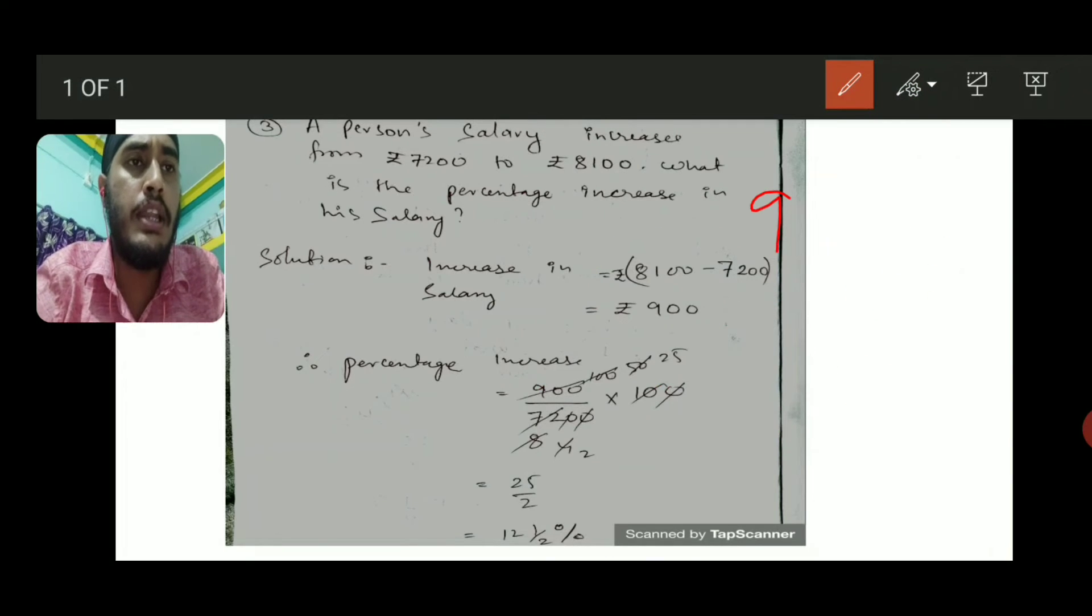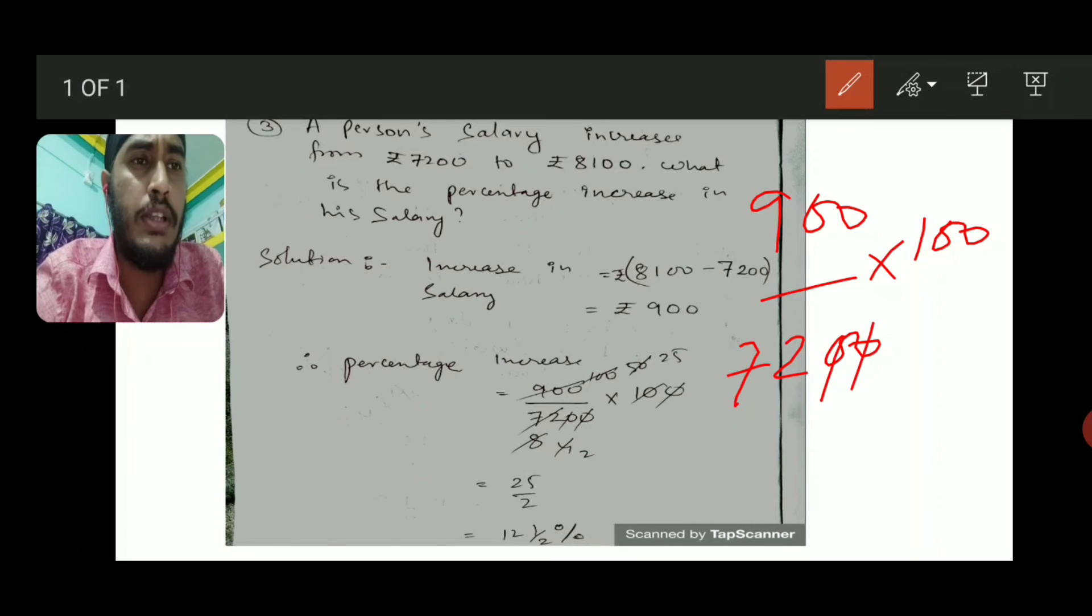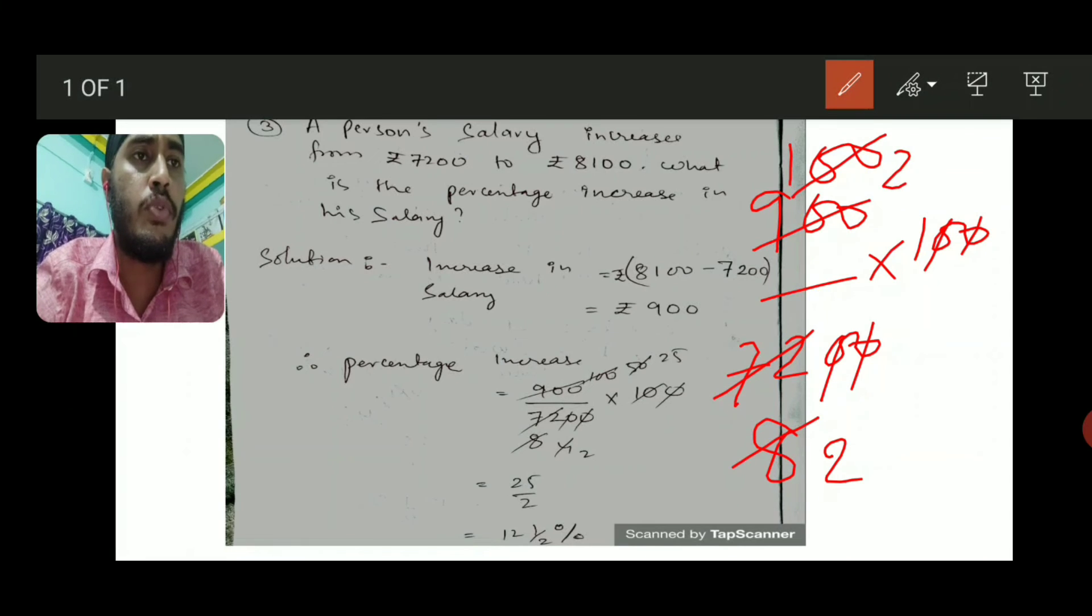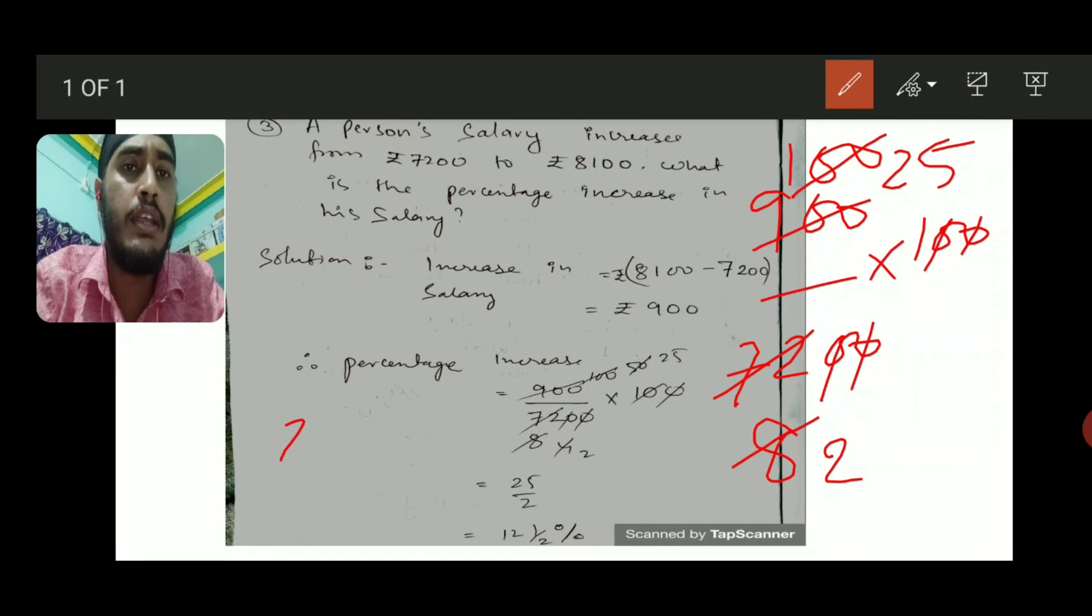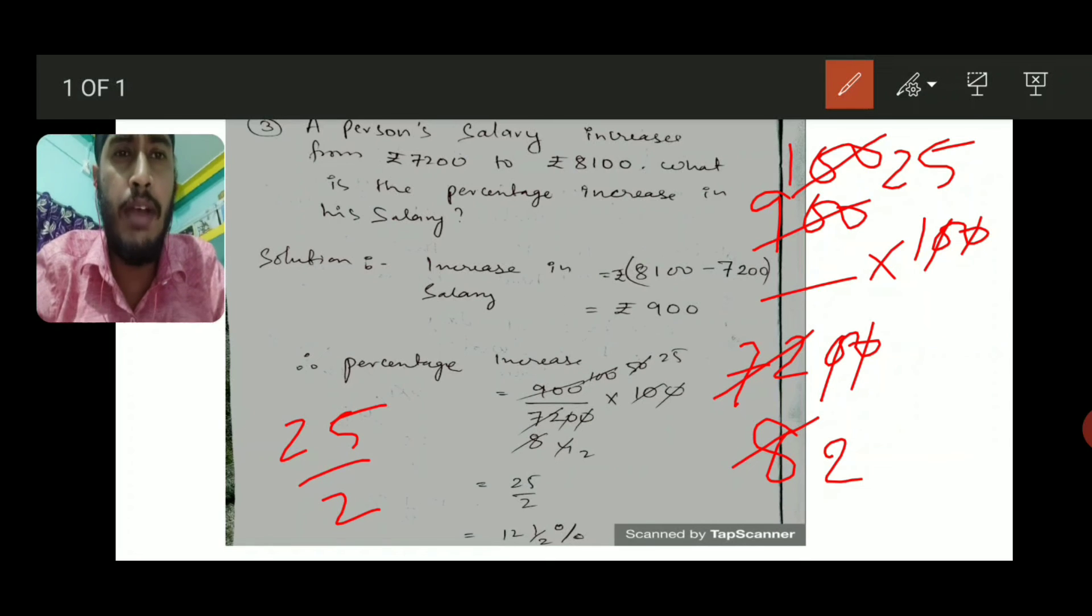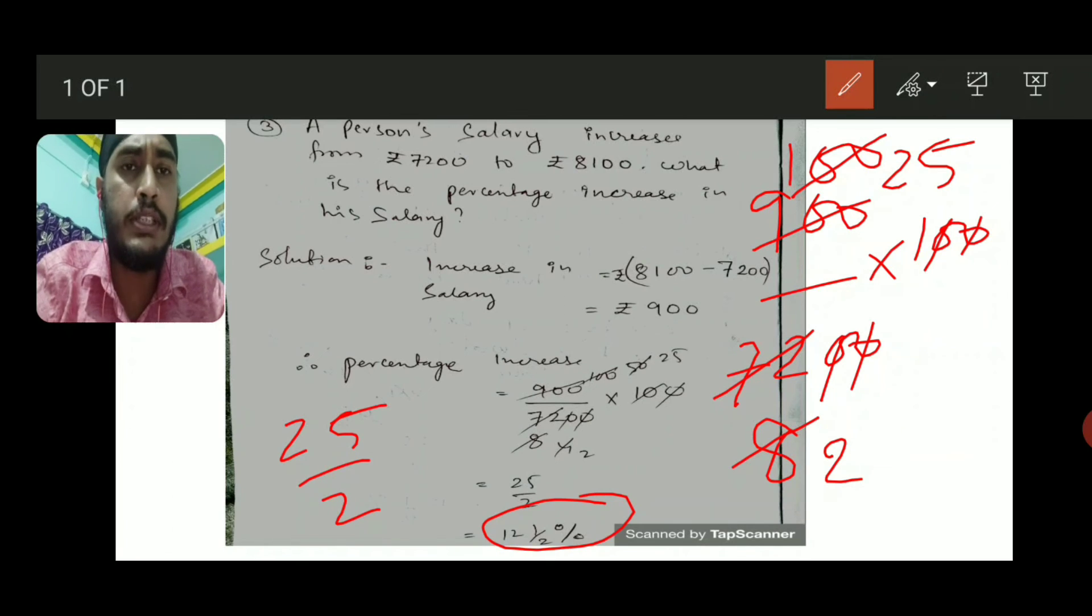So 900 divided by 7200 multiplied by 100. Now how it will be cancelled - this zero and this will be cancelled. Now what is left: 72 and 900. So 9 eights is 72, 9 ones are 9, and 100 again with 4, 4 twos are 8, 4 twenty-fives is 100. So what we will get: 25 by 2. When we divide, you will get 12 and 1 by 2 percent, that is 12 and a half, 12 and 1 by 2 percent.